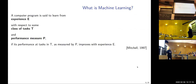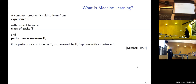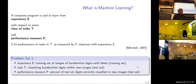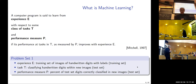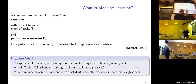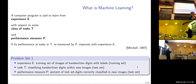In problem set one, we give you an experience — a set of handwritten digits and labels for those digits. The task is classifying unseen digits as to what number they represent. The performance metric is what fraction of the digits you got right in the test set. You have a training set which is your experience, then you hold out part of that set and use it as a test set to see how well you can do.